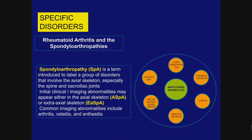Let's now move on to the spondyloarthropathies — things are going to get a little more confusing. This is now abbreviated SPA. SPA is a term introduced to label a group of disorders, most of which are shown here on your right, that tend to involve the axial skeleton, particularly the spine and sacroiliac joints. I'll show you chest wall involvement as well.